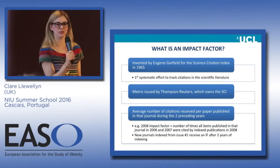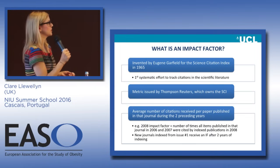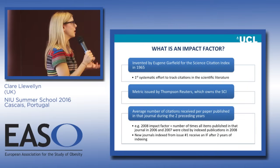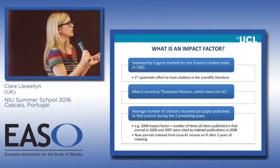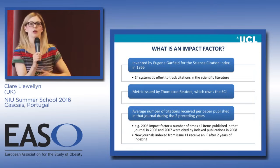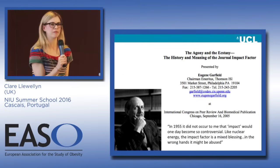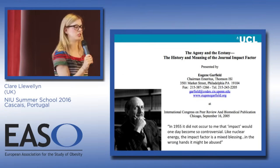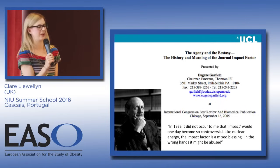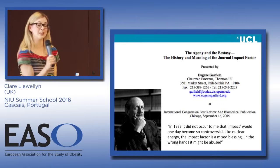The impact factor is issued by Thomson Reuters, who own the SCI. Technically, it is the average number of citations received per paper published in that journal during the preceding two years. So an impact factor for a journal for 2008 would be the average number of times all items published in that journal in 2006 and 2007 were cited. New journals only get an impact factor after they've been in circulation for two years. This is Eugene Garfield, who came up with this bright idea.